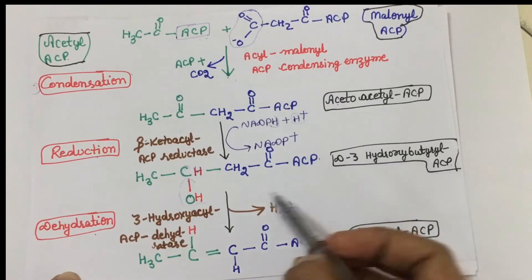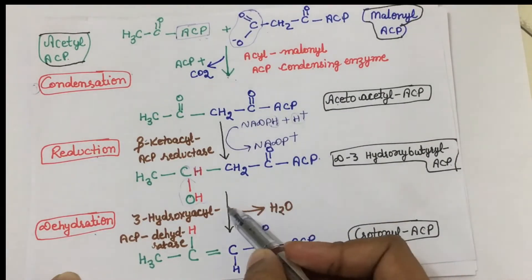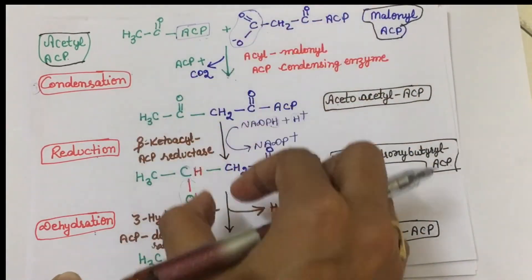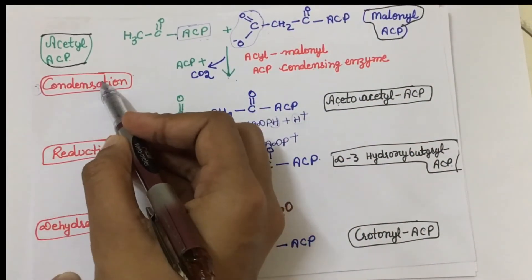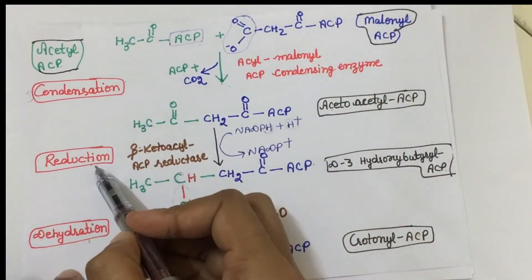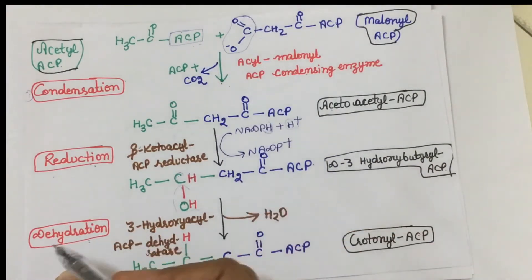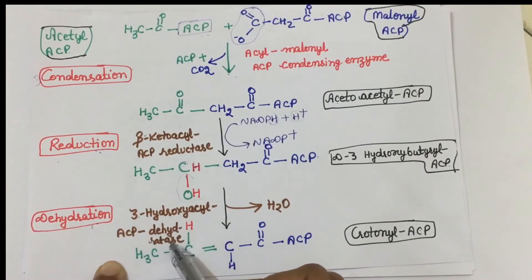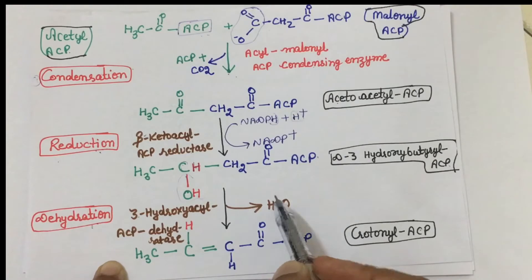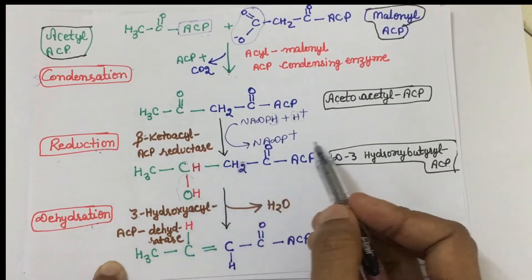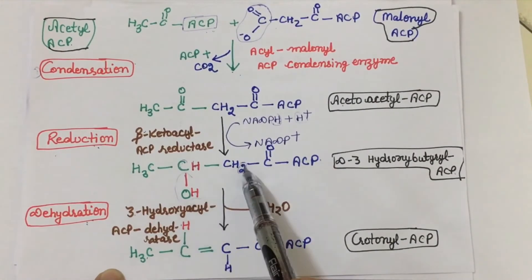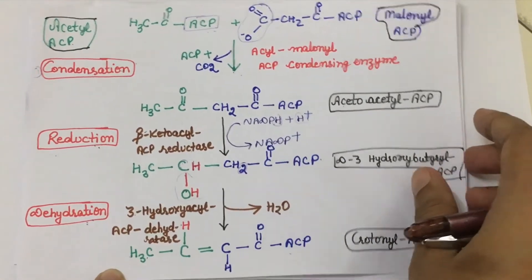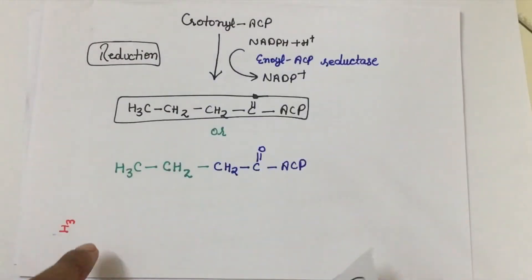After that, the dehydration step converts D-3-hydroxybutyryl-ACP into crotonyl-ACP, and water is removed. The enzyme used is 3-hydroxyacyl ACP dehydratase. You can remember what's happening by the names: condensation means two molecules are condensing, reduction means reduction is occurring, and dehydration means removal of water. The specific hydrogens are removed to form crotonyl-ACP.